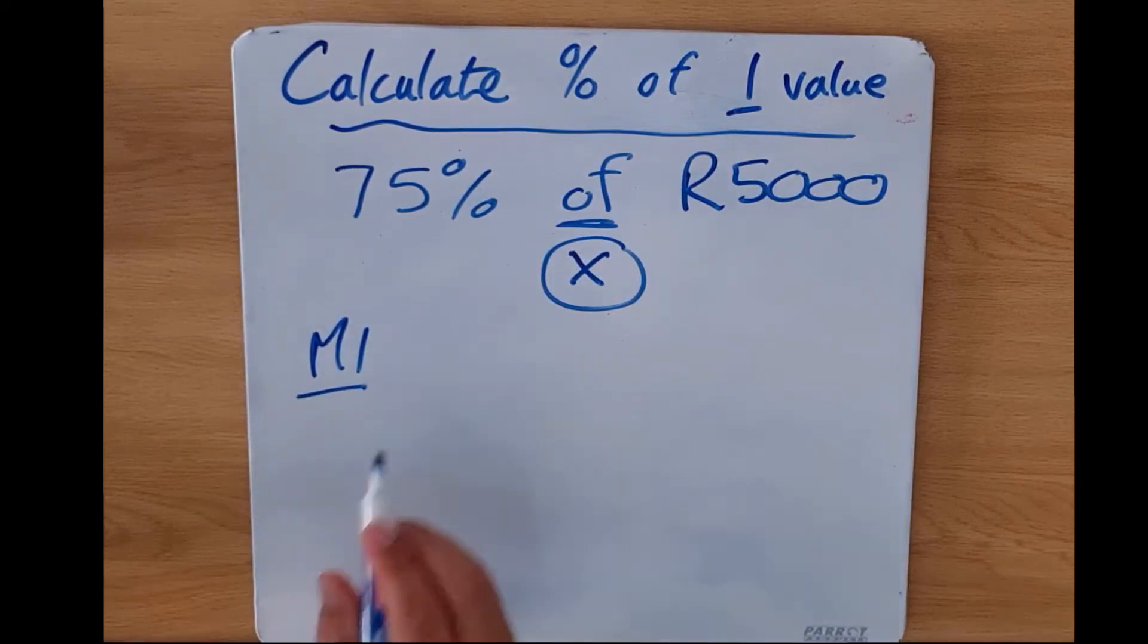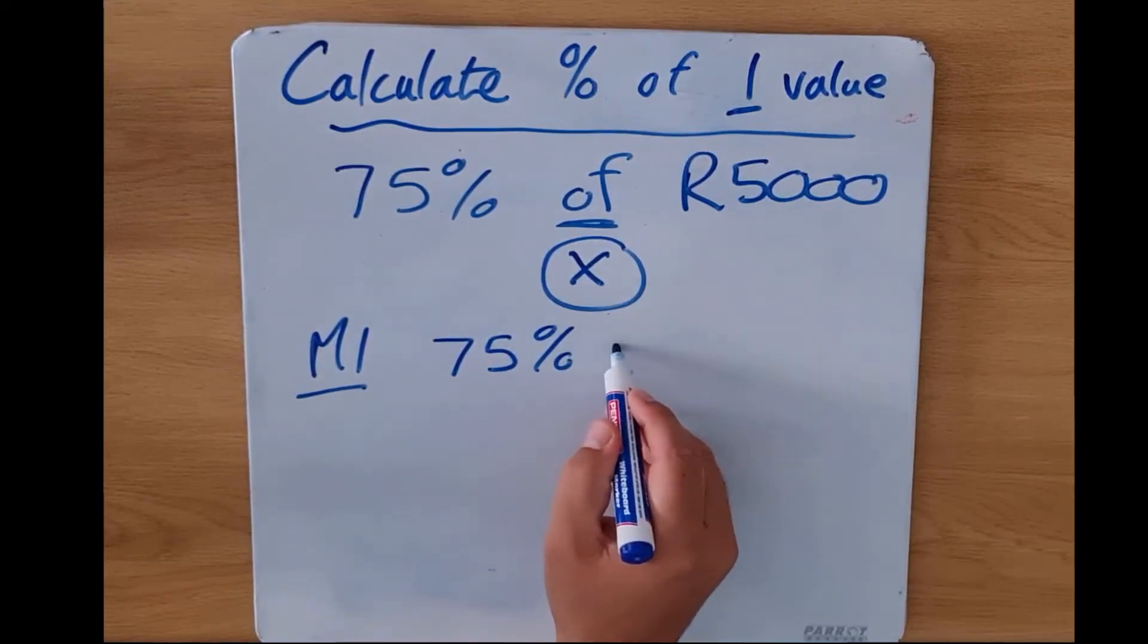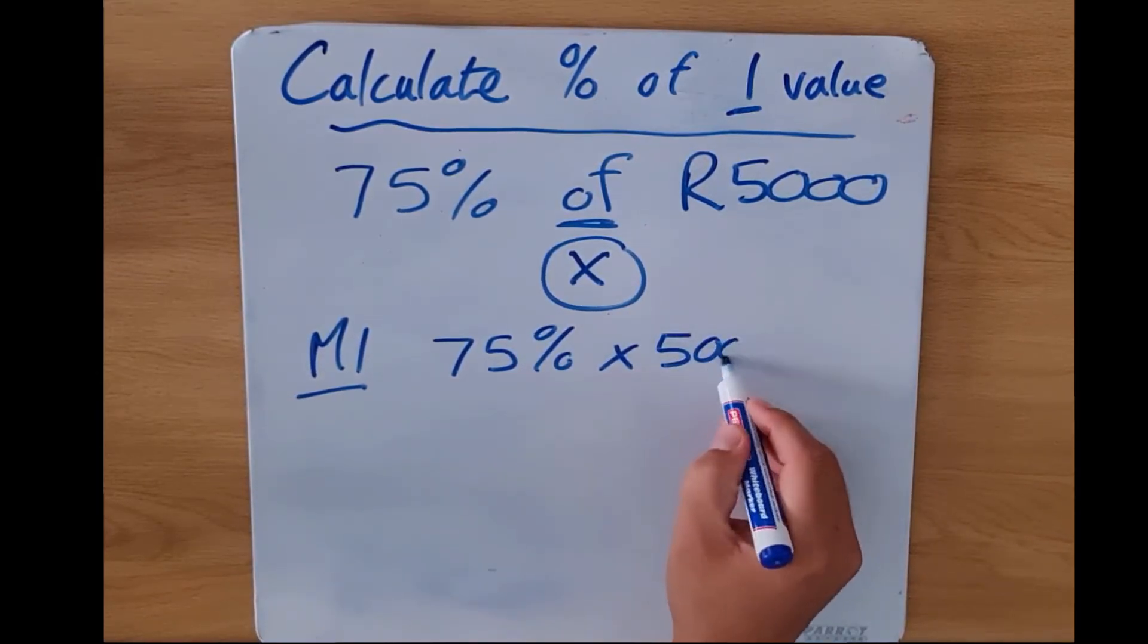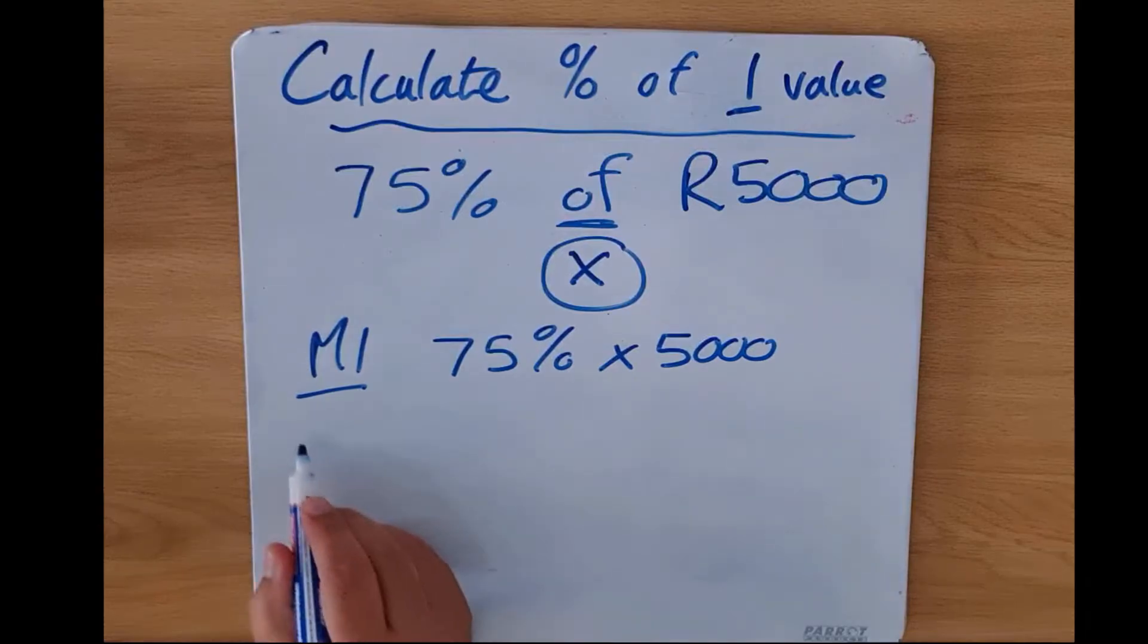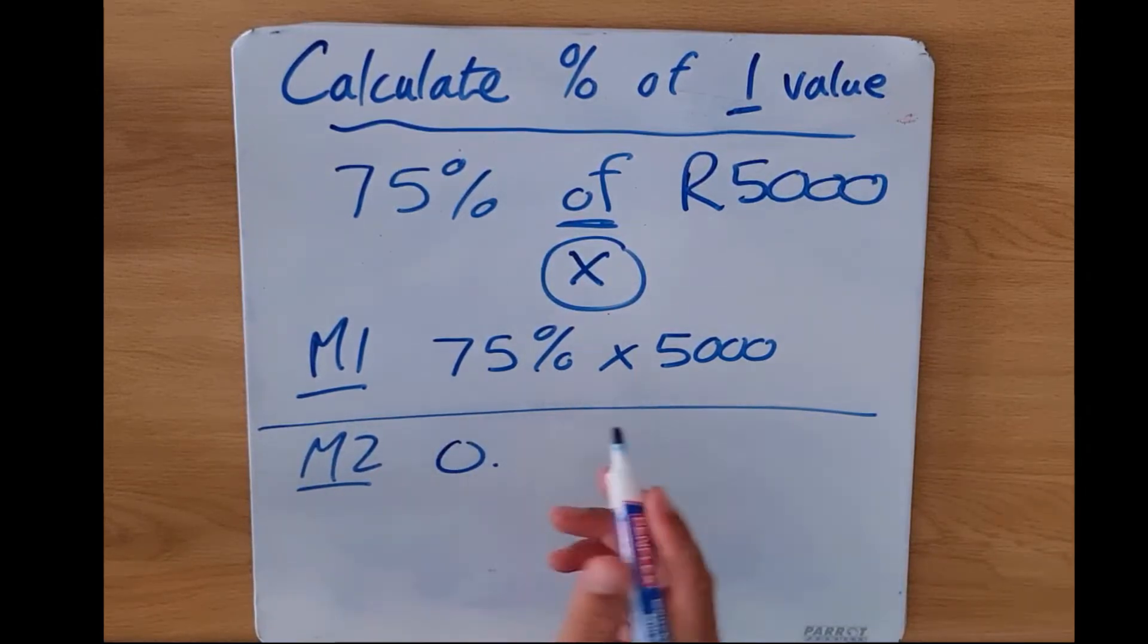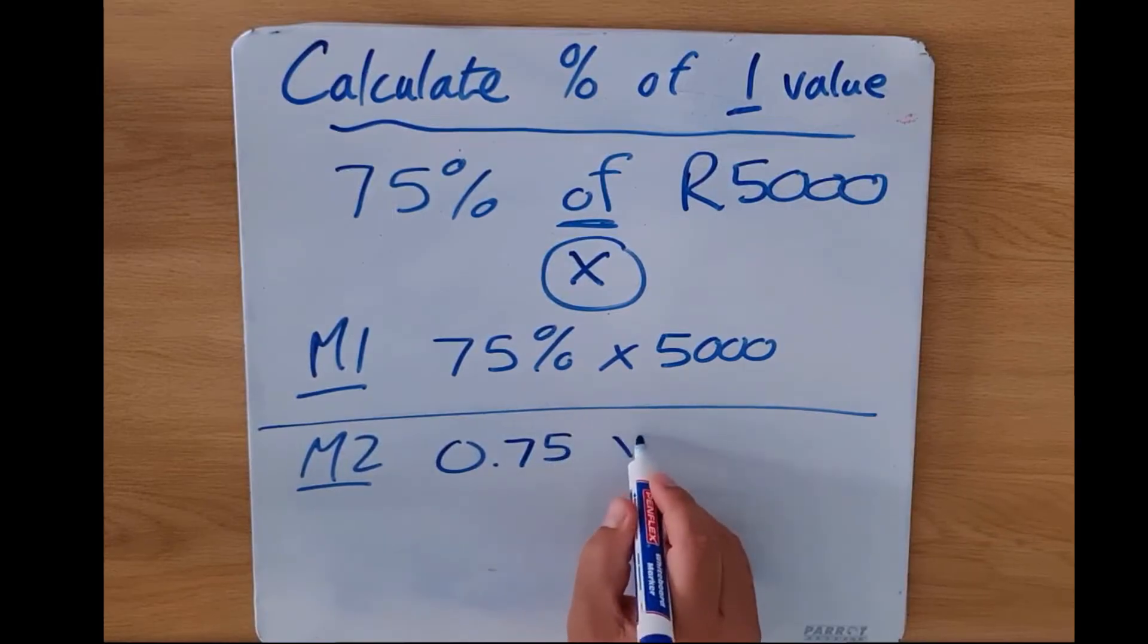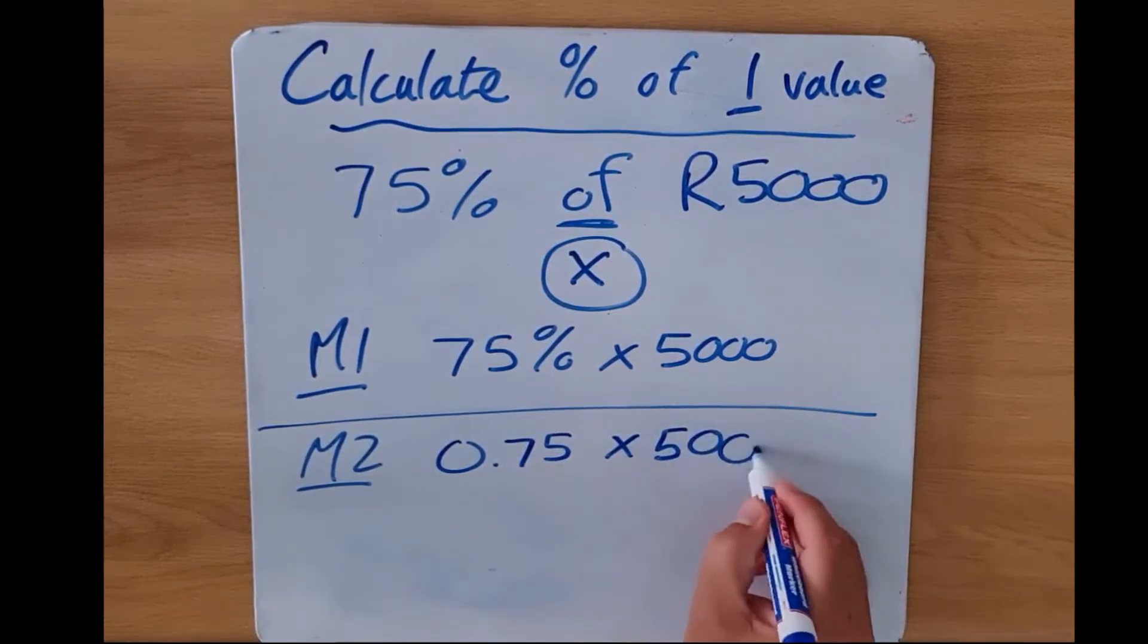Method one would simply be to say on your calculator 75% multiplied by 5000. Method two would be to say 0.75 - remember the other way of expressing our percentage - 0.75 multiplied by 5000.